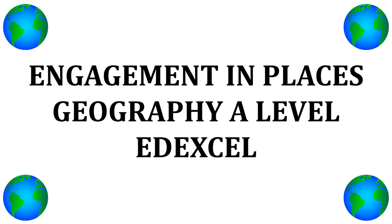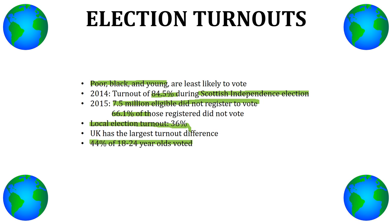This is a video for engagement in places for Geography A level for the Edexcel specification. The first part of the spec you need to know for engagement in places is about election turnout. Here are a few facts about election turnouts and who's not likely to vote.